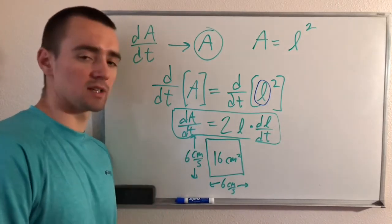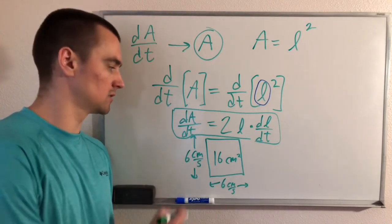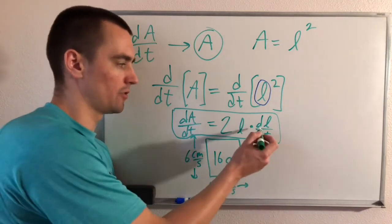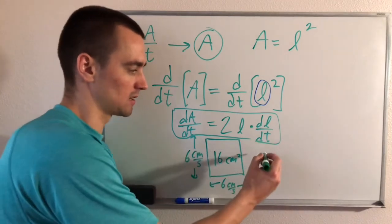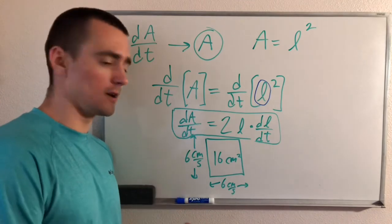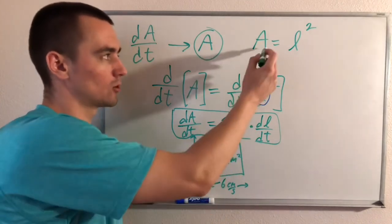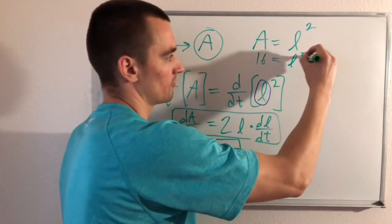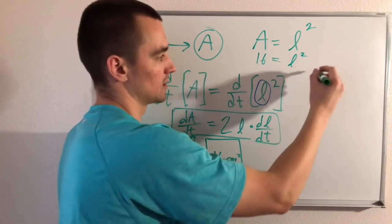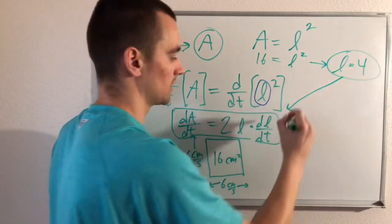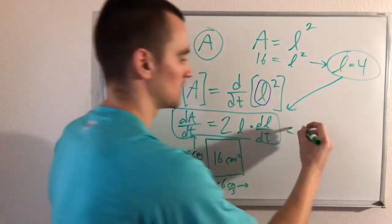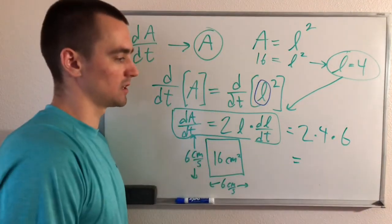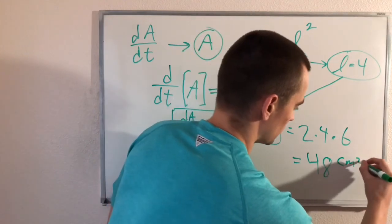What the question asked us to find was how quickly the area is increasing, so we need dA/dt. We just need to plug in L and dL/dt. We know the side lengths are growing at 6 centimeters per second, so dL/dt = 6. We don't know L directly, but we know the area is 16 centimeters squared. Going back to A = L², plugging in 16 gives us L = 4. Plugging into our equation: dA/dt = 2 × 4 × 6, which gives us 48 centimeters squared per second.